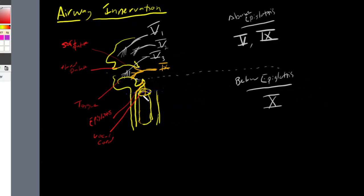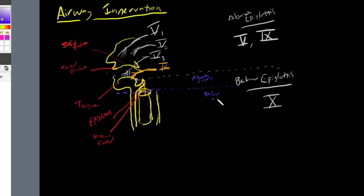That region is going to be our vocal cords. We're going to draw a line bisecting our vocal cords, and that is going to help us understand the different innervations of cranial nerve 10. You can see our vocal cord right over here — I'm just going to draw a border going across it, and label this part above cords, and then below it, below cords.